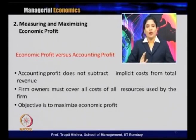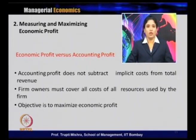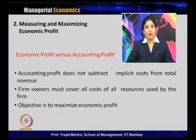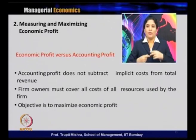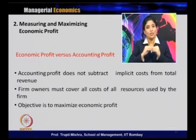Firm owners must cover all costs for all resources used. The rational approach requires considering all types of cost. The objective is to maximize economic profit, not accounting profit. If maximizing only accounting profit, implicit cost is ignored. Economic profit maximization accounts for all costs — both explicit and implicit — which is the correct goal of the firm.